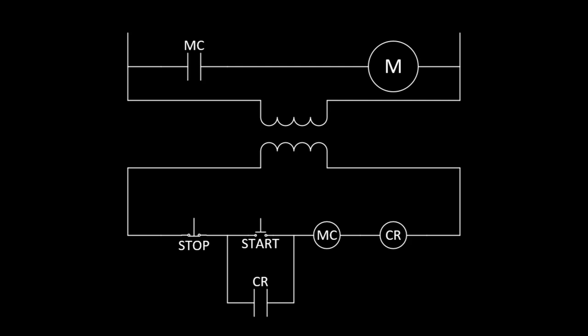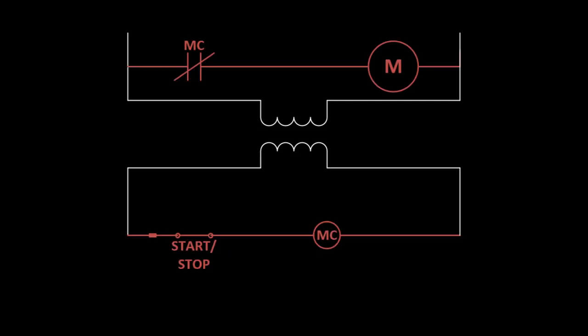That last point forms the key difference in function between two-wire and three-wire control circuits. The two-wire control circuit, being controlled by a simple switch, will remain energized so long as there is power to the circuit. After a loss of power, either due to an external power outage or to other components in the circuit, such as an emergency stop switch or a thermal overload, the two-wire circuit will re-energize as soon as power is restored.